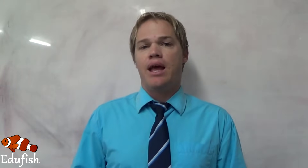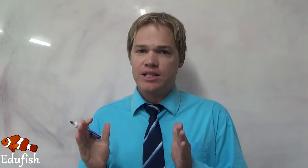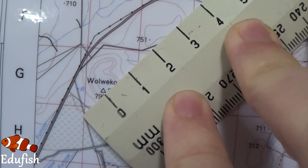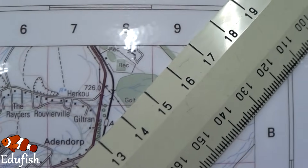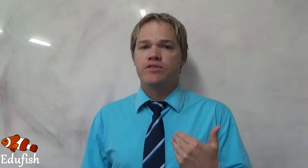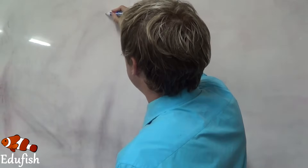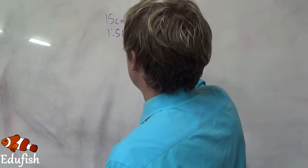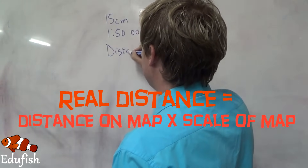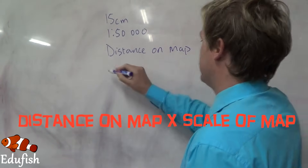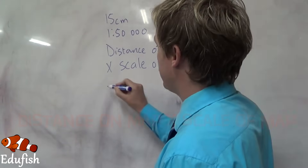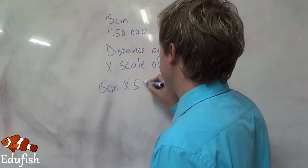Now we are going to look at the map again and physically measure the distance between two different places, then calculate the real distance. We are going to take it from the highest point on Volverkop, indicated by the triangle, all the way to the middle of the golf course — and we find that it is more or less exactly 15 cm. So we write down 15 cm, and we know the scale is 1 to 50,000. The method says: distance on map times scale of map. The distance on the map is 15 cm and the scale is 50,000.